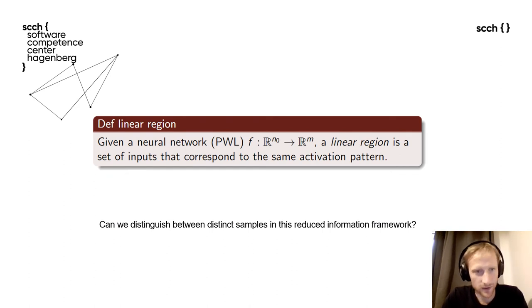Finally, we need one more definition of a linear region. For a neural network, a linear region is a set of inputs that corresponds to the same activation pattern. That also means that a linear region can be defined as a maximum compact region where a neural network defines as a linear function.